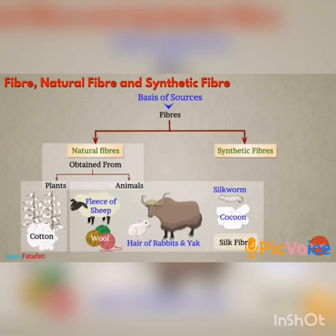Examples for synthetic fibers are nylon, polyester, acrylic, etc. In our 6th standard, we learned about only plant fibers like cotton and jute. Now we are going to learn about the animal fibers like wool and silk.